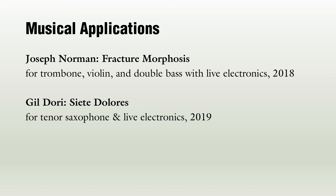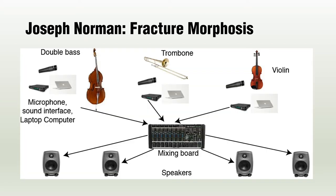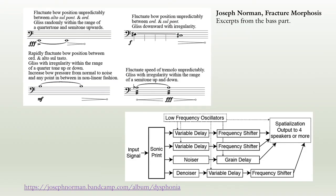SonicPrint was made available to several artists over the last couple of years. We present here two resulting works: Joseph Norman's Fracture Morphasis and Gil Dori's Siete Dolores. Fracture Morphasis is a composition for trombone, violin, and double bass with live electronics. Each musician performs with their instrument and a laptop processing their own sound. The output of the processing lines for each instrument is routed to a shared spatialization system. In Fracture Morphasis, each instrumentalist is provided with four distinct initial musical gestures. The learning step of SonicPrint is built into the piece as an introduction during which each instrument's gesture is performed without audio processing.